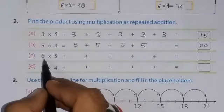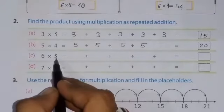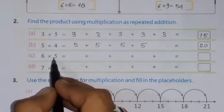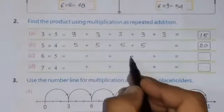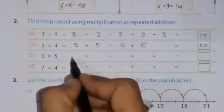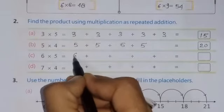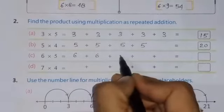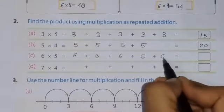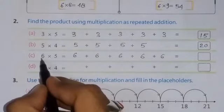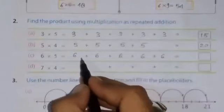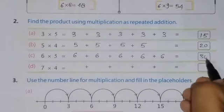Similarly, 6 times 5. 6 times 5 or 5 times 6. 1, 2, 3, 4, 5. So, we have to write 6 five times. 1, 2, 3, 4, 5. Six how many times? 5 times. So, the sum of these numbers will be 6 fives are 30.